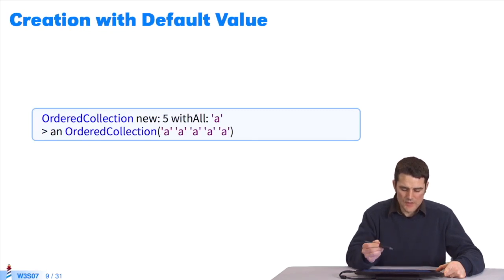There are other types of messages you can send to the classes to initialize them. This is another example: NEW:WITHALL:. I want a size 5 collection. Every element must be initialized with a specific object. In this case, a string containing A.